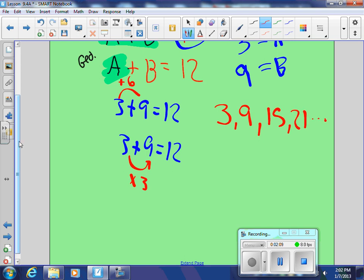For the geometric, it would be 3, 9, 27, 81, and so on.